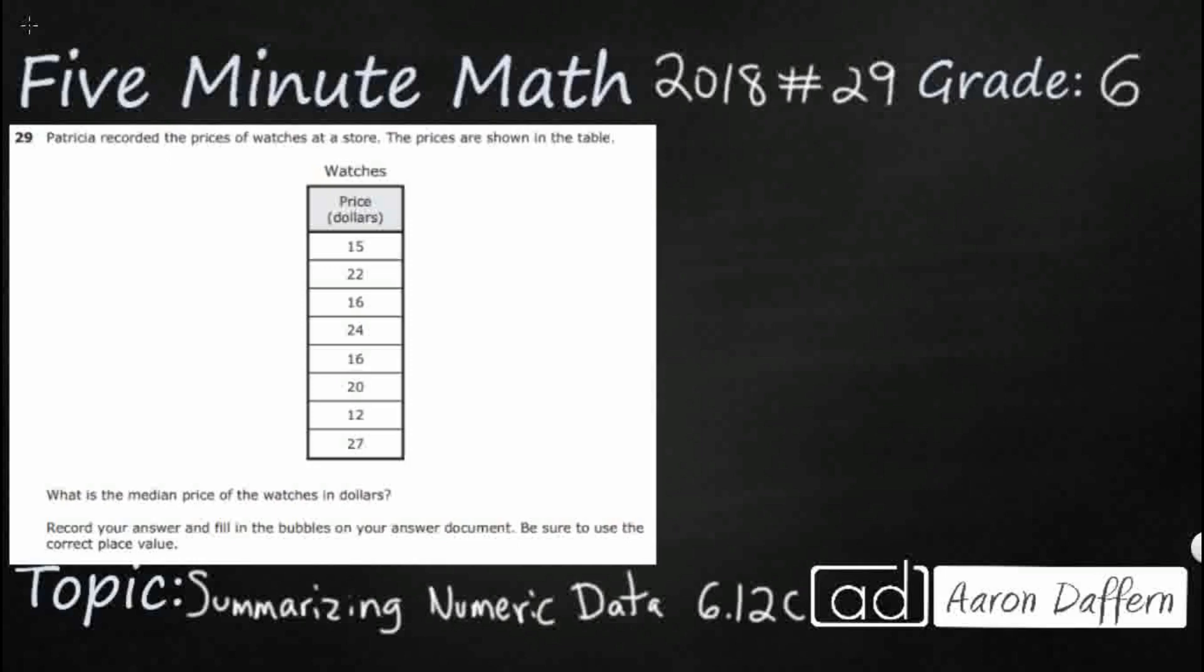So we have the prices of watches at a store, and we've got anywhere from $15 to $27, but sometimes a little bit higher, sometimes a little bit lower. These watches are not listed in any particular order, and we need to find the median price. We don't have A, B, C, or D to choose from because we need to fill in our answers into the bubble sheet. So first, we need to figure out what this means.